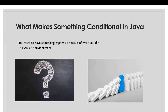So what makes something conditional in Java? You want to have something happen as a consequence of something else — something you did, or something that the computer or program did. Like you want something to happen as a result of something else. For example, a trivia question: you ask someone where is the Sears Tower, they give you an answer, and you let them know whether it's right or wrong based on their answer.